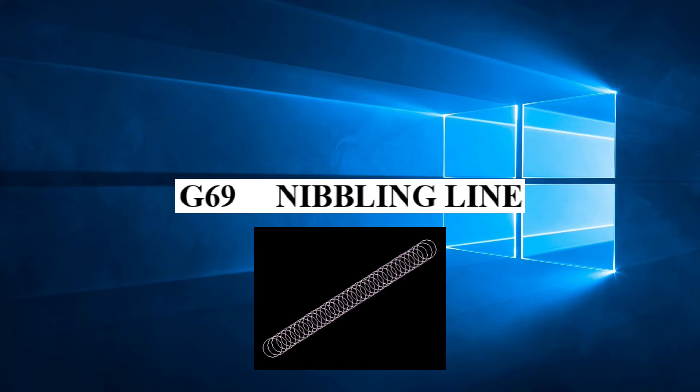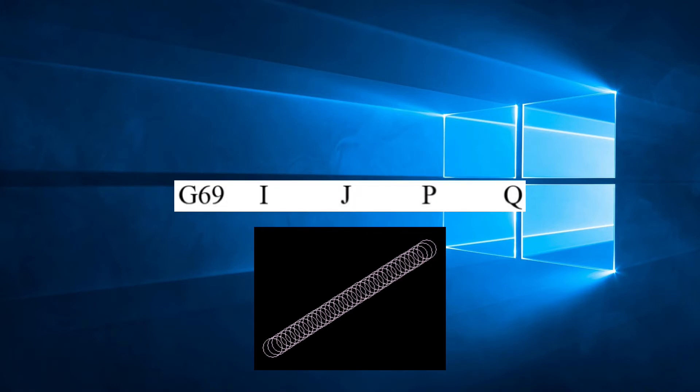We can define G69 as follows. Starting from either the current position or a point designated by G72, a line of length I is nibbled using a punch of diameter P at a pitch Q with an angle J in relation to the X axis. The parameters for G69 are I, J, P, Q.